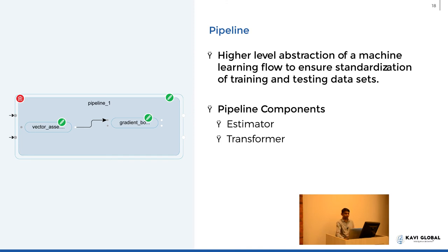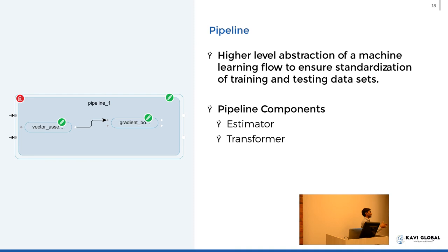There are two components to this pipeline. It uses an estimator component wherein, based on the training data, it fits and creates a model. Then there is the transformer component, which uses the model already created in step one and applies the data on that particular model to test the accuracy or feasibility of the model. This is one of the components which makes life a lot easier and reduces non-value-adding activities for the developer.